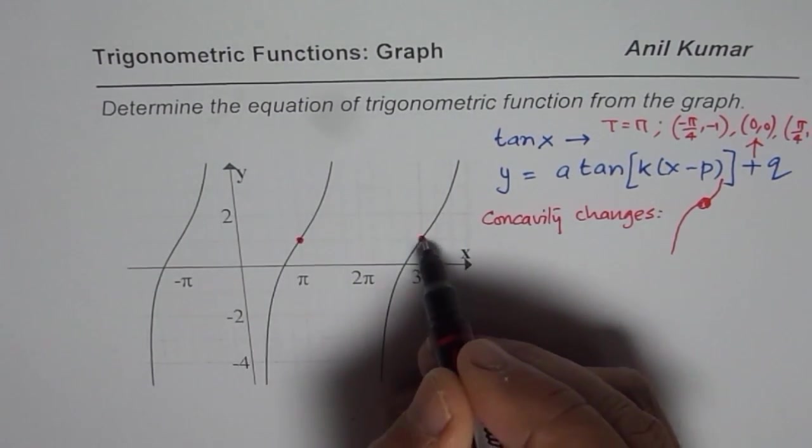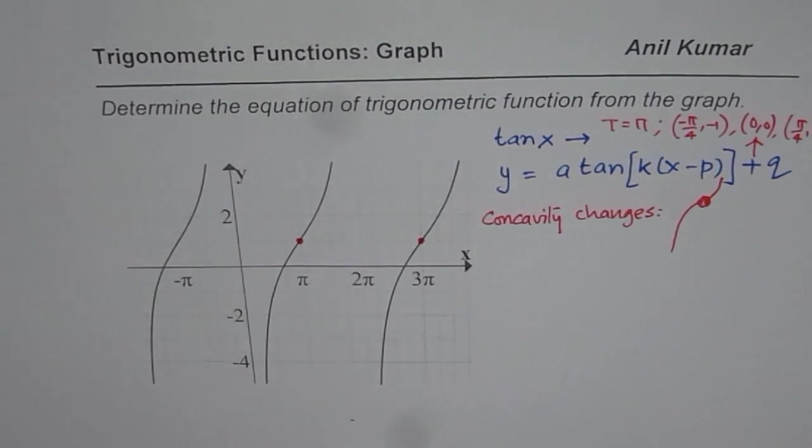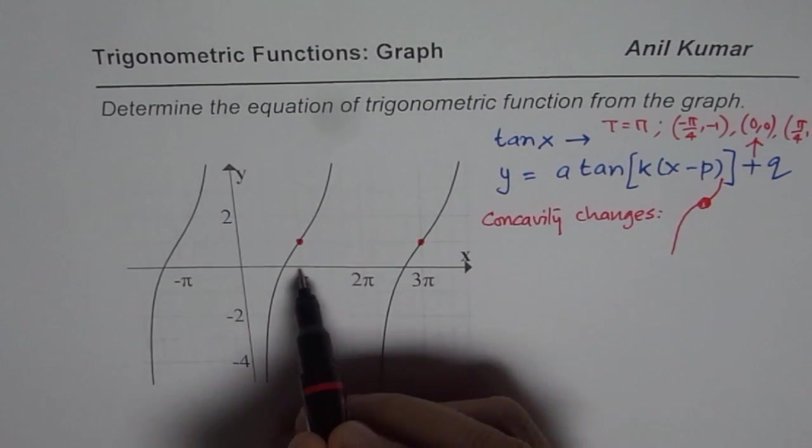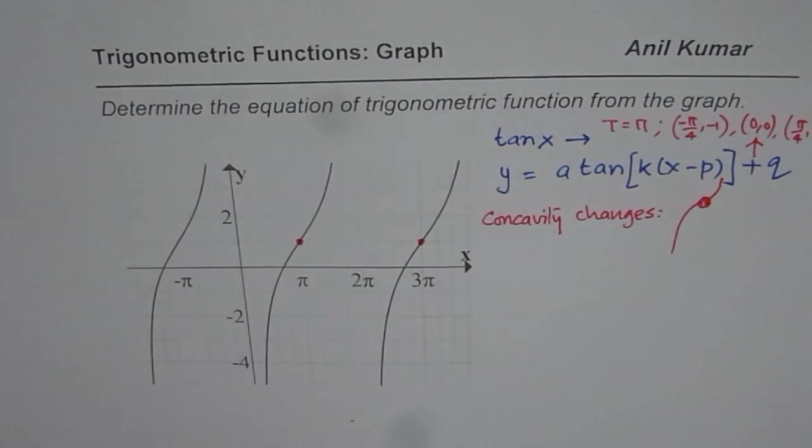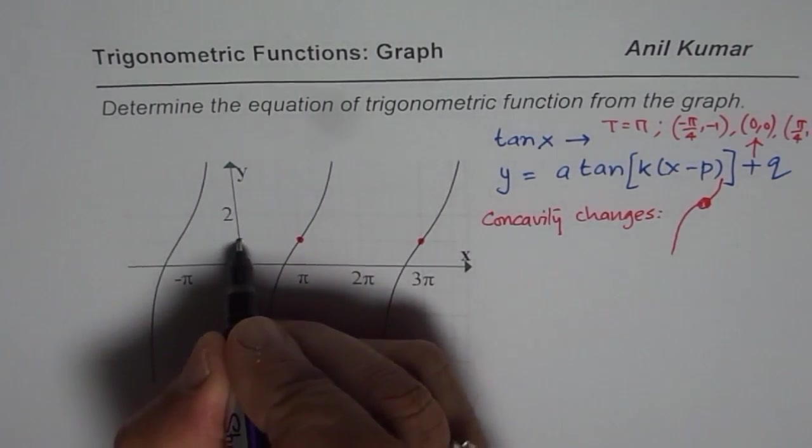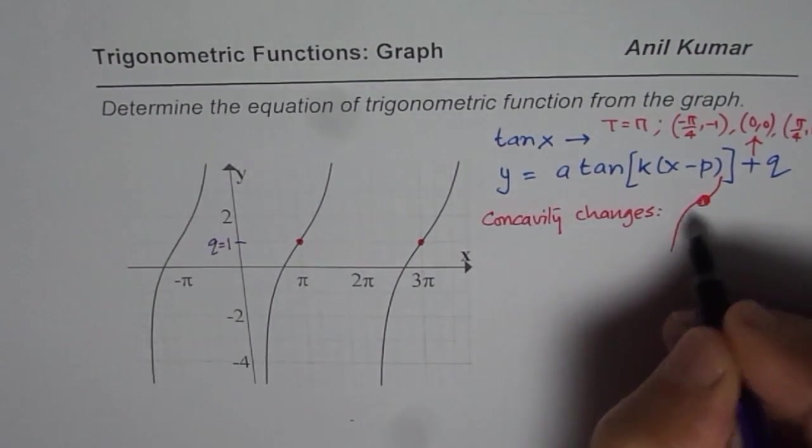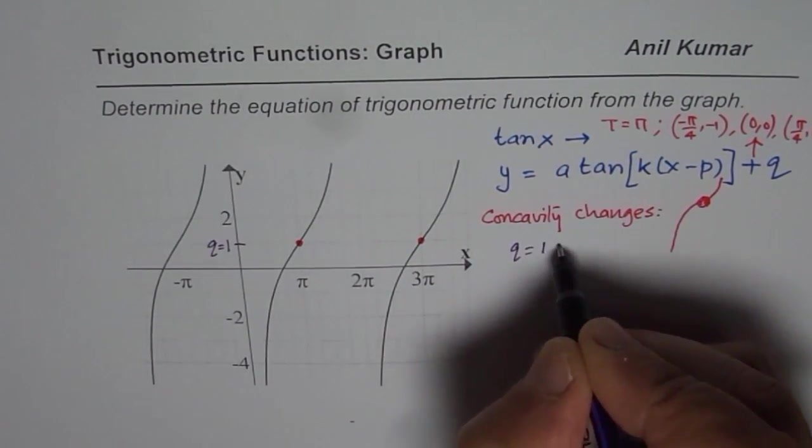So this point is one of those critical points which help us to give a lot of information. First information which it gives is, how much is it above the x-axis. So this value is q for us, which is 1. So from here, we get q equals to 1.